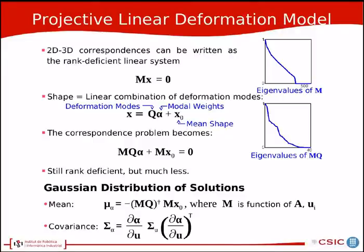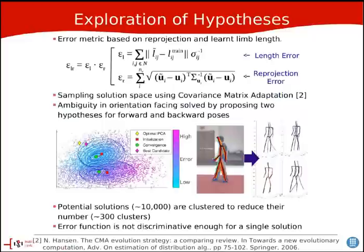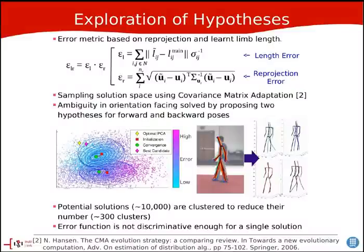The important thing to remark here is that since this is a linear application, we can directly project the 2D Gaussians through it and obtain hypergaussians in pose space, which is shown at the bottom of the slide. Now that we have the hypergaussians, we must sample to try to find the solution. We propose using a modified version of the covariance matrix adaptation, where the error metric is based on length errors — that is, the human limbs are more or less of a certain length — and reprojection errors, in which the 3D shapes we are looking for must more or less reproject to the 2D Gaussians we got as input.